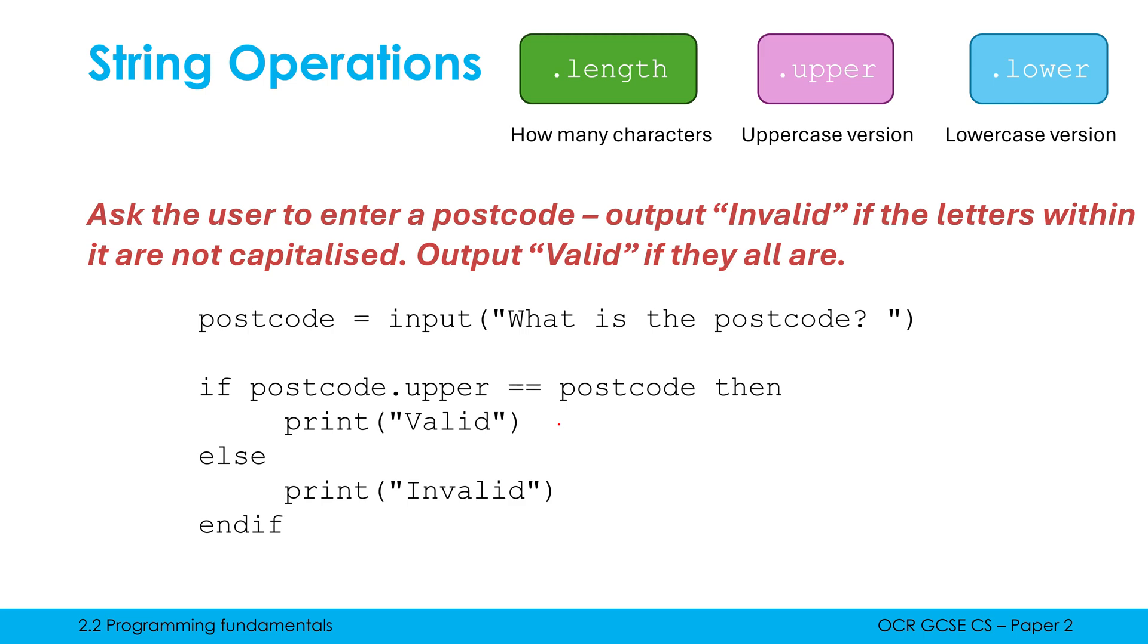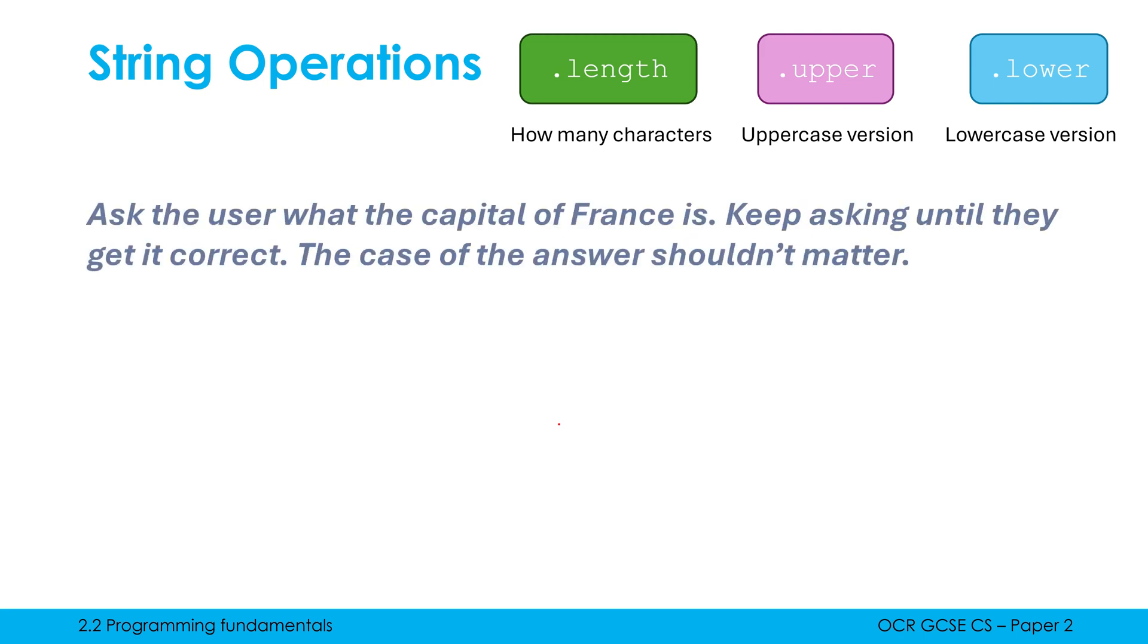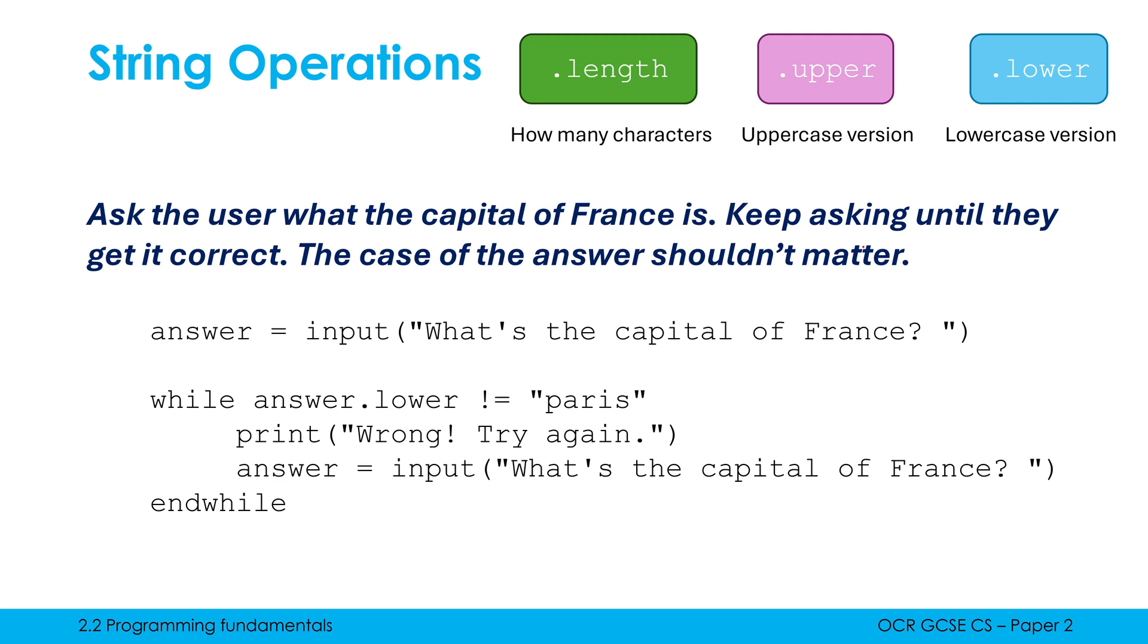Because this is used so often, let's do a third and final example, where we're going to ask the user to enter what the capital of France is. We're going to keep asking until they get it correct. Case of the answer shouldn't matter. It shouldn't matter if they say Paris lowercase or uppercase or the capitalized P or whatever it is, it doesn't matter, as long as the word is Paris. Well, I need a while loop here, or a do until loop, because we don't know how many times it will take for them to get it right.